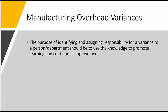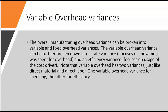To learn overhead variances, you should already have some exposure to direct material and direct labor variances. The overall manufacturing overhead variance can be broken into variable and fixed overhead variances, so there's going to be a total of four overhead variances — two are variable overhead and two are fixed overhead. In each case, one focuses on spending and the other focuses on efficiency.